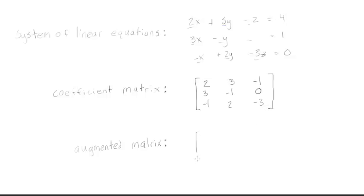So an augmented matrix, same thing. We will place the coefficients in the same places. So we would have 2, 3, and then negative 1. 3, negative 1. And then we'd have the same on the bottom. 3, negative 1, and 0. And negative 1, 2, and negative 3. And now what we're going to do is just add an extra column to the side, but we're just going to divide it with a line. And then on this side of the line, we just add in these numbers, our constant terms from each equation. So we have 4, 1, and 0. And we close the brackets. And that is an augmented matrix.